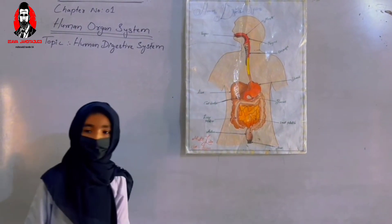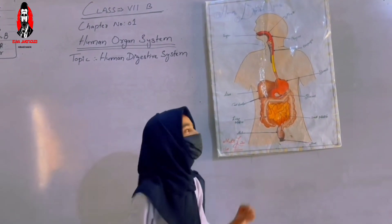The digestion system starts with our mouth. The first parts are our mouth, teeth, tongue, teeth.